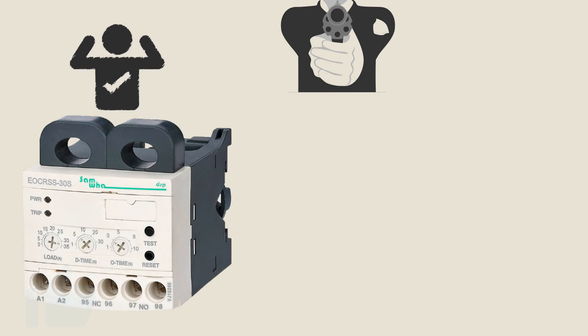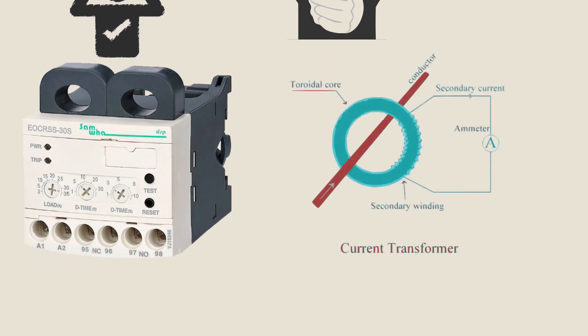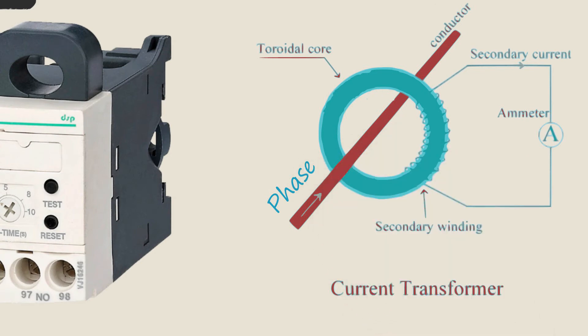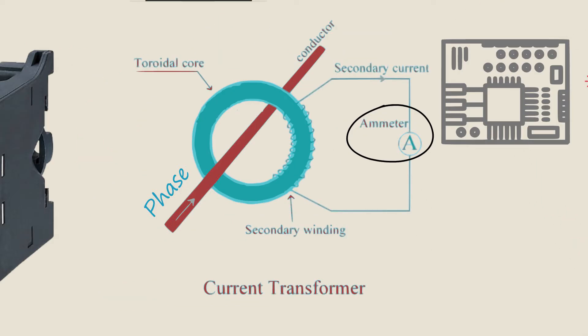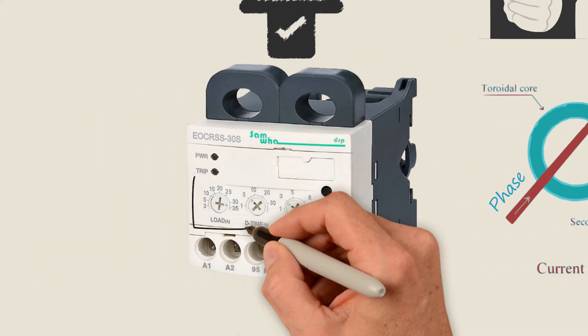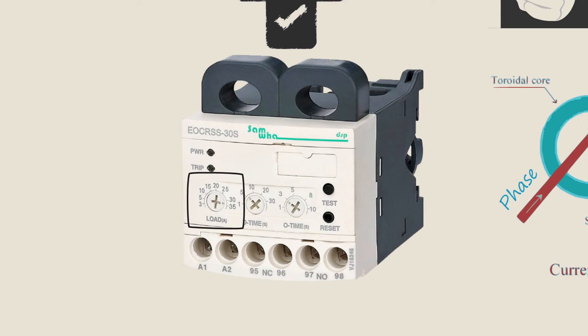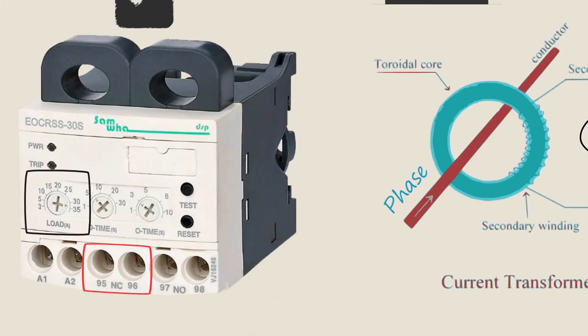All right, this is also an electronic overload relay that uses a current transformer mounted on each phase that directly measures current. Internal circuitry calculates the temperature based on a user-adjustable setting and will trigger the feedback contact of the overload to open in case of a continuous overload.